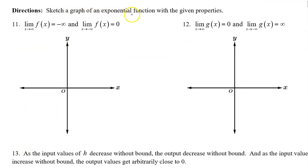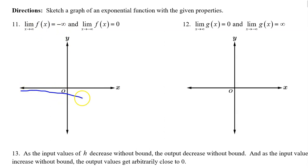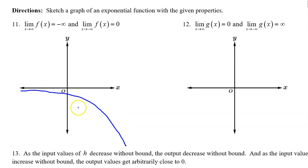Sketch a graph of an exponential function with the given properties. Number eleven says the limit as x approaches positive infinity of f of x is negative infinity. That means that on the right, f of x must be falling. So that would look something like this as an exponential function. And incidentally, we want the limit as x approaches negative infinity of f of x to be zero. As you can see, as we go to the left, the graph as drawn is approaching zero. So this is a good graph.